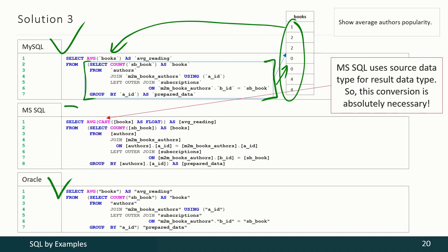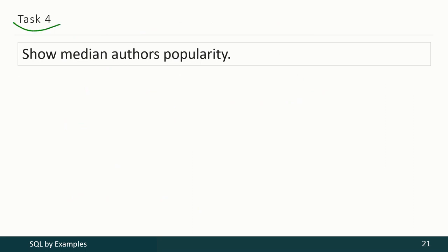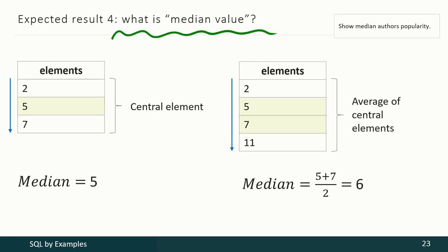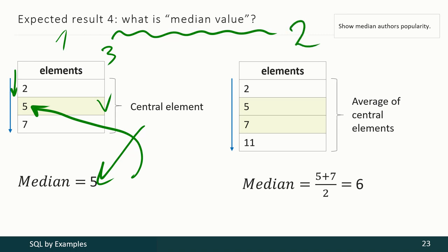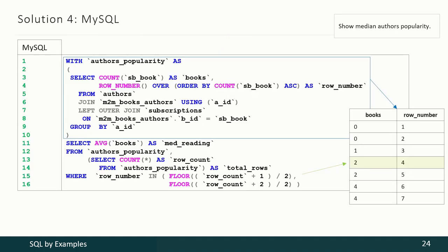In the next task we have to show not the average but the median author popularity. To calculate the median: if we have an odd number of elements, we order them ascending and select the central element. If we have an even number of elements, we order them ascending, select the two central elements, and calculate their average. Not all DBMSs support built-in median functions. MySQL does not currently, but we can produce how many books of each author were taken by subscribers, number the rows, find the central row or rows with arithmetic, and pass those values to the AVG function.